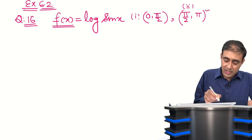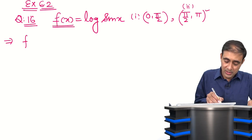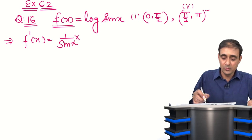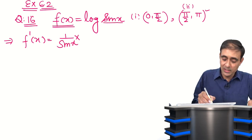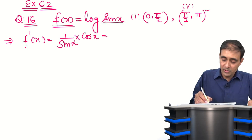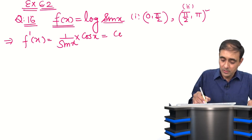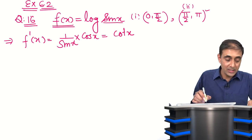Let us differentiate f(x). f(x) = log(sin x), so its derivative f'(x) = 1/sin x into the derivative of sin x, which is cos x. So we can say this is cos x/sin x, that is cot x. So f'(x) = cot x.